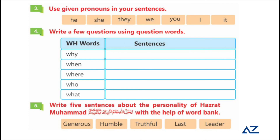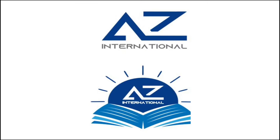Write a few questions using question words — for example: 'Why are you writing?' or 'What are you writing on the board?' Make your own sentences using question words. Write five sentences about the personality of the Holy Prophet (PBUH) with the help of the word bank provided. You can also write additional sentences of your own beyond the word bank. This was the end of the video — we will see you in the next video.